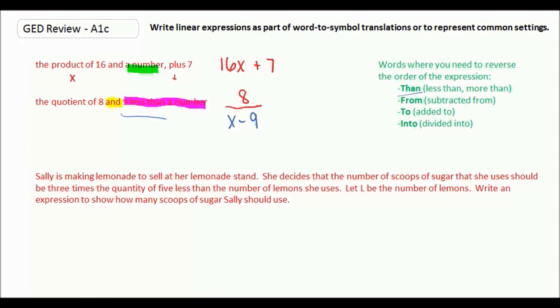The other words that tell you when you need to reverse are: less than or more than, from, such as subtracted from, and then to and into. So one more example like that: if I say a number subtracted from 2, because we see 'from,' we need to reverse the order. So it's not X minus 2, it's going to be 2 minus X.